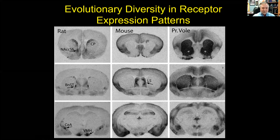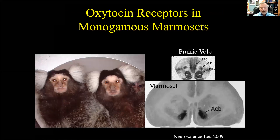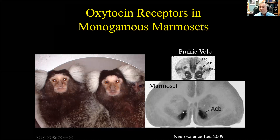I've been very interested in understanding what it is about this gene that gives it these species differences in distribution. It's not just among rodents — looking at primates, marmosets are monogamous and have nuclei accumbens loaded with oxytocin receptors, like prairie voles. Rhesus macaques, which are not monogamous, have virtually no oxytocin receptors in their nucleus accumbens. There is a pattern — though not 100% accurate — that monogamous species tend to have receptors in these reward areas.